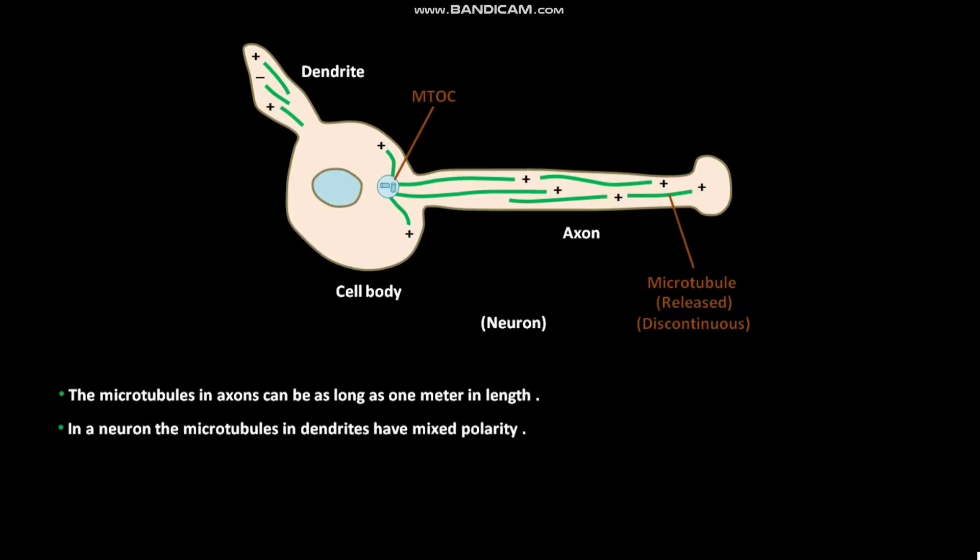In a neuron, the microtubules in dendrites have mixed polarity. The functional significance of neuronal microtubules having mixed polarity is not clear.